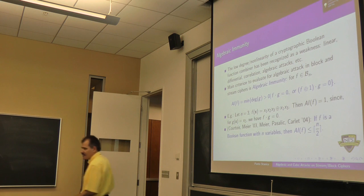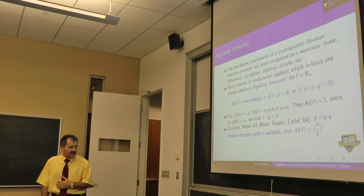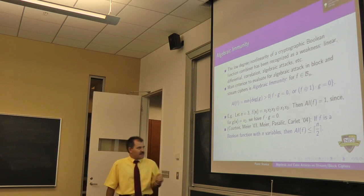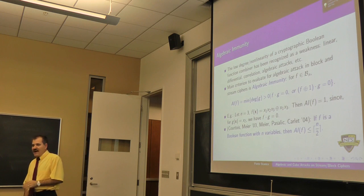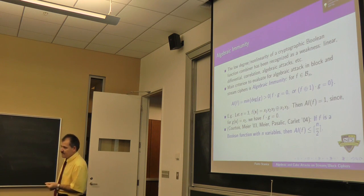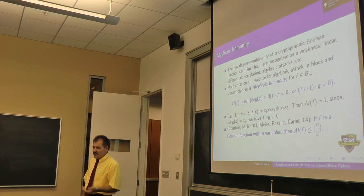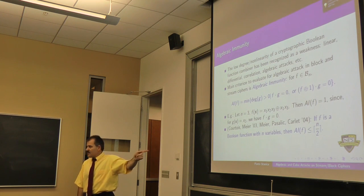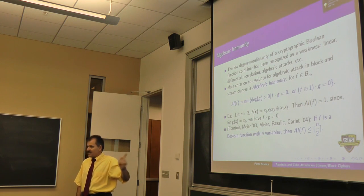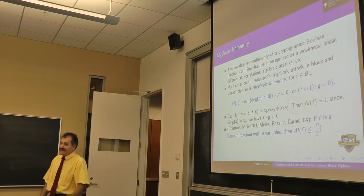There are legal results from 2003. If f is a Boolean function with n variables, then the algebraic immunity is bounded by the ceiling of n over 2. In other words, even if you take a function with high algebraic degree, the algebraic immunity is like using a function that has degree up to and including n over 2 ceiling, which is fantastic.